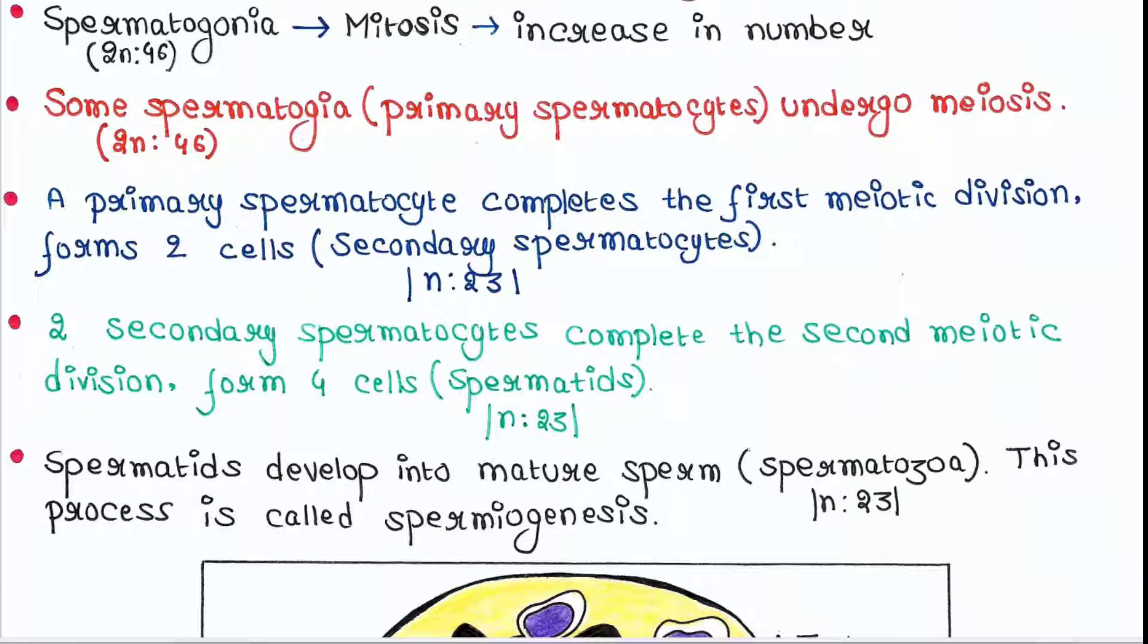A primary spermatocyte completes the first meiotic division and forms two cells called secondary spermatocytes. Secondary spermatocytes are haploid cells, each contains 23 chromosomes. So now we have two secondary spermatocytes from one primary spermatocyte.